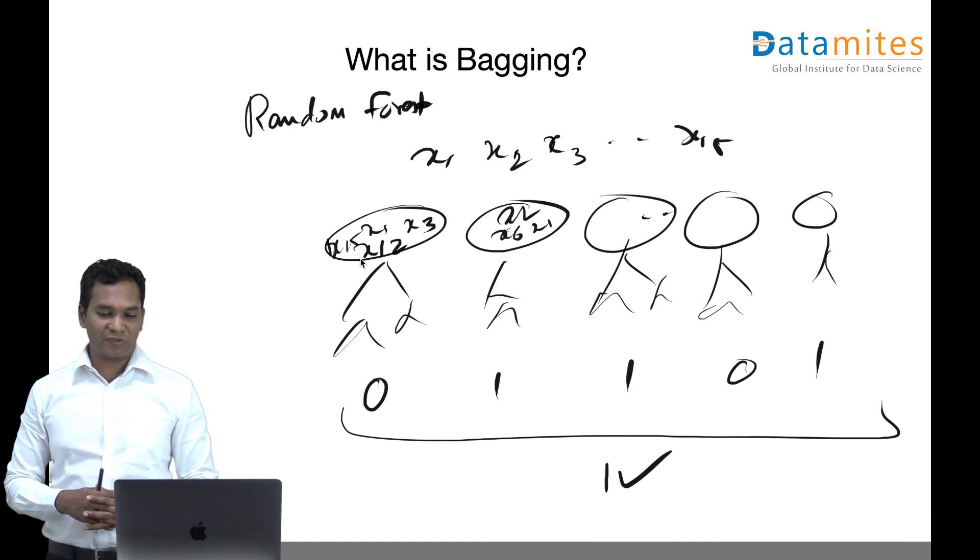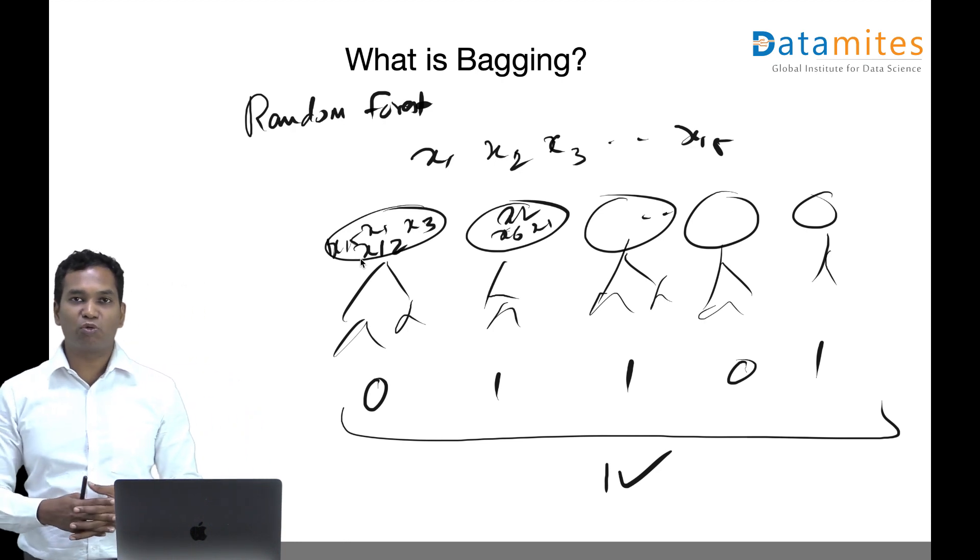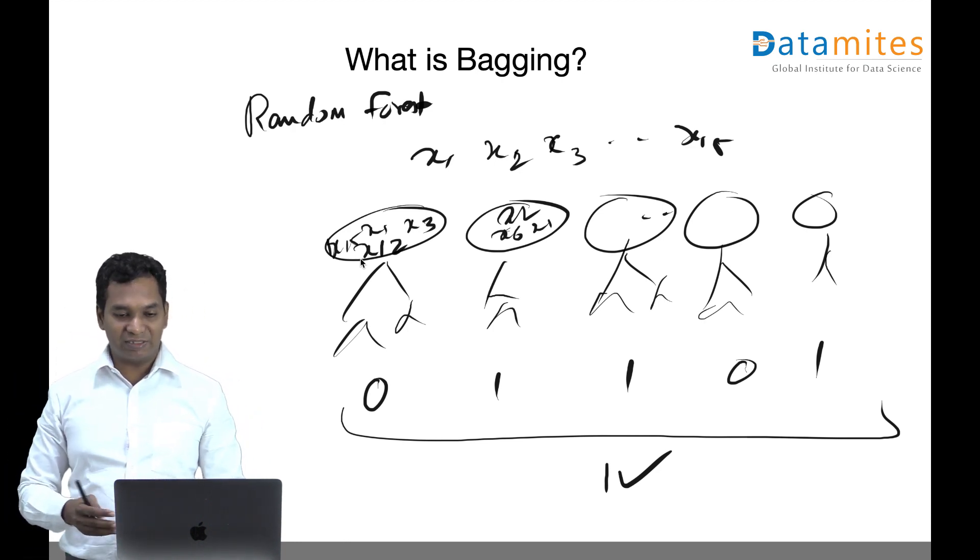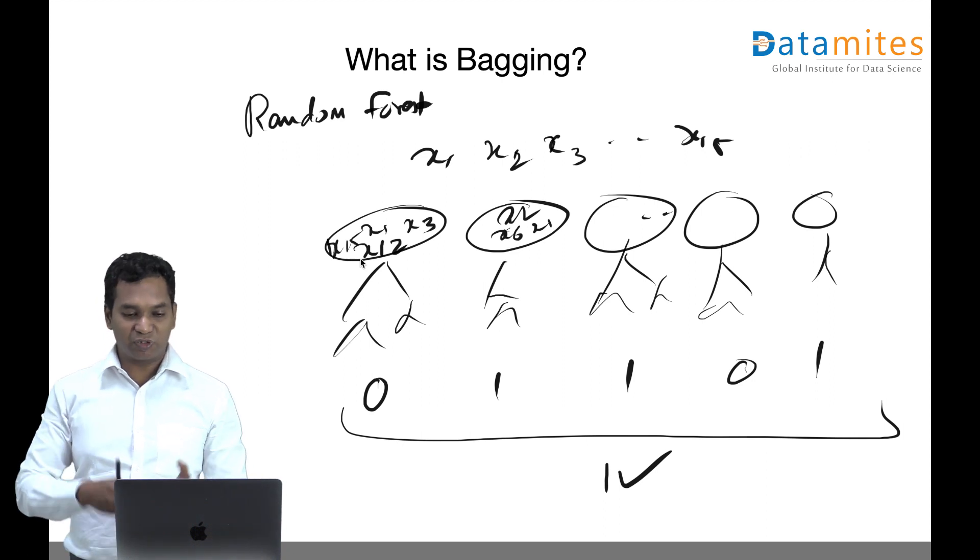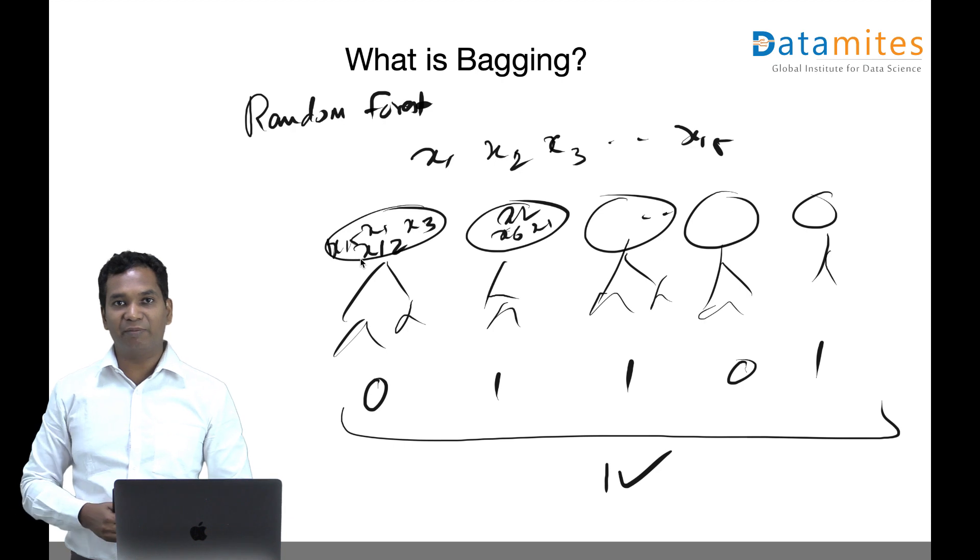The advantages of bagging: it actually avoids overfitting. It regularizes because it generalizes better. We are taking groups of randomly sampled variables with replacement, building independent trees, and making conclusions based on not a single tree but all the trees together by taking a majority vote.